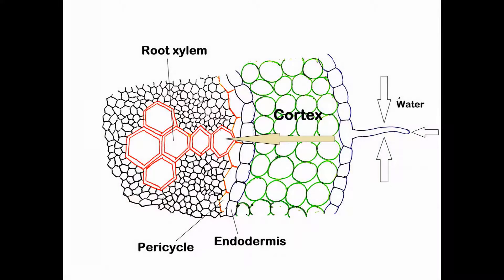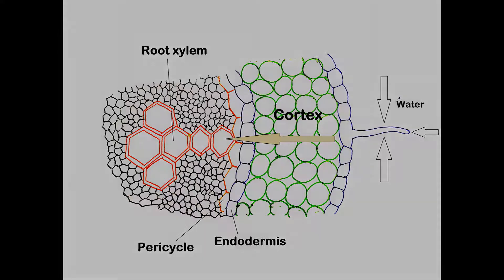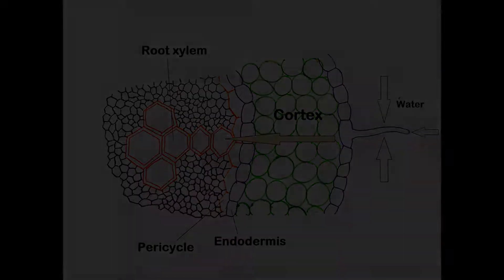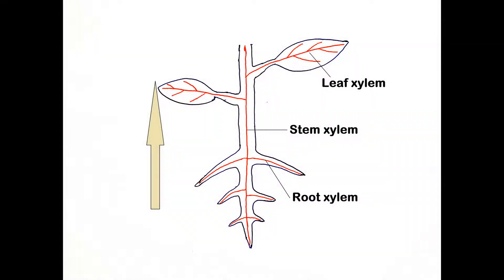Plants absorb water from the soil through the root hairs. The water then moves through the cortex, endodermis, and finally the pericycle of the roots before eventually reaching the xylem elements of the roots. These root xylary elements are in contact with the xylem ducts of the stem, which are in turn in contact with the xylary elements of the leaves and other aerial parts of the plant.